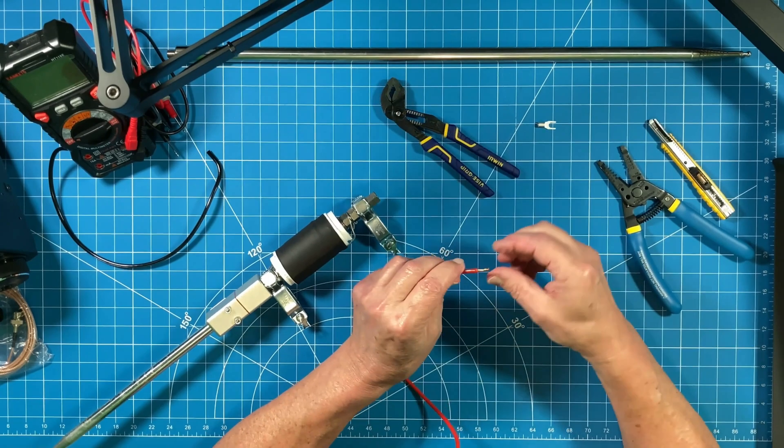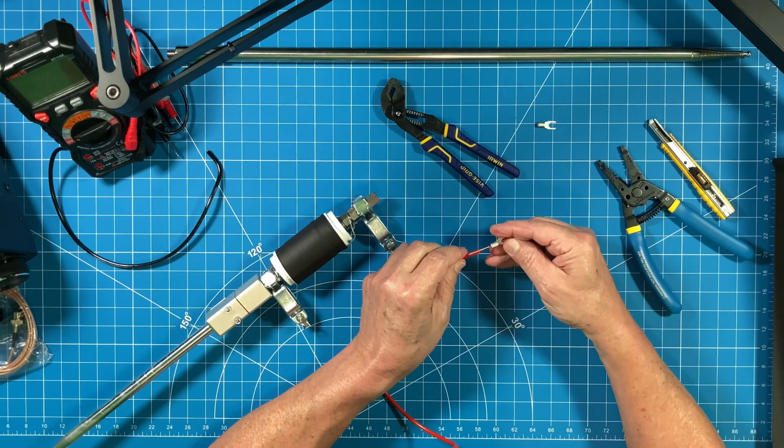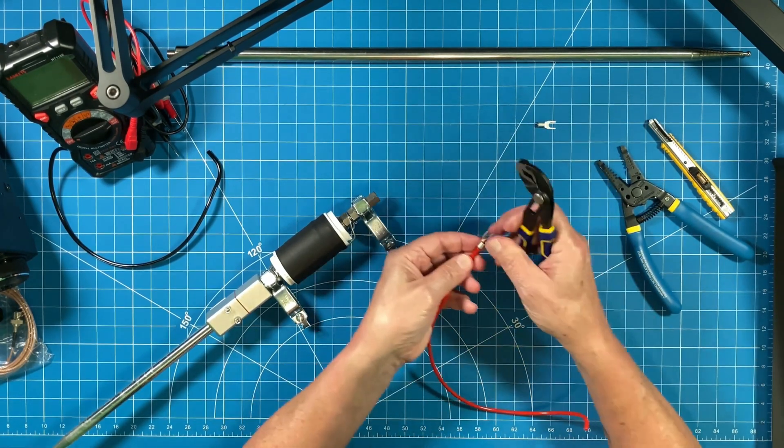We all twist our wire. I wonder if that really helps anything, but it's what we're used to doing. On goes this terminal, and I just crimp it down with a pair of pliers.